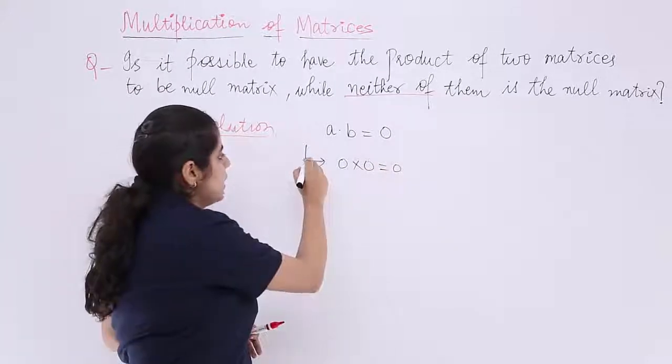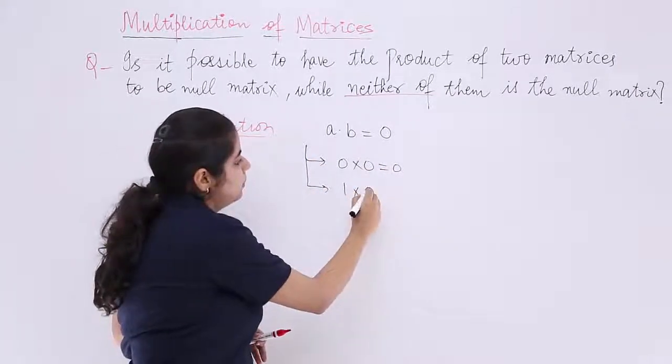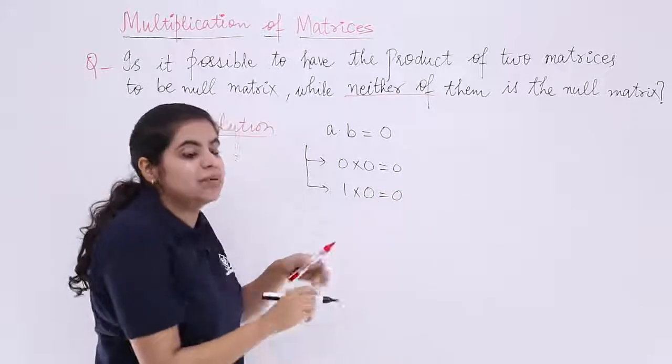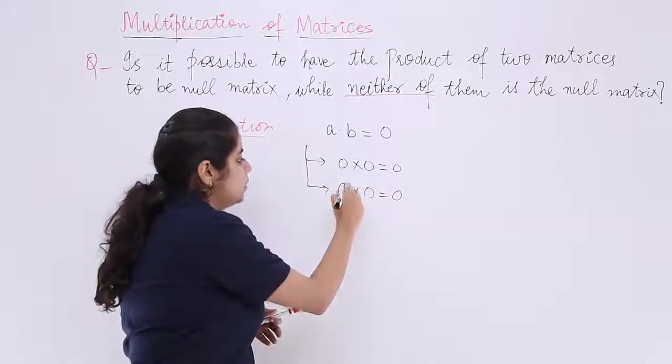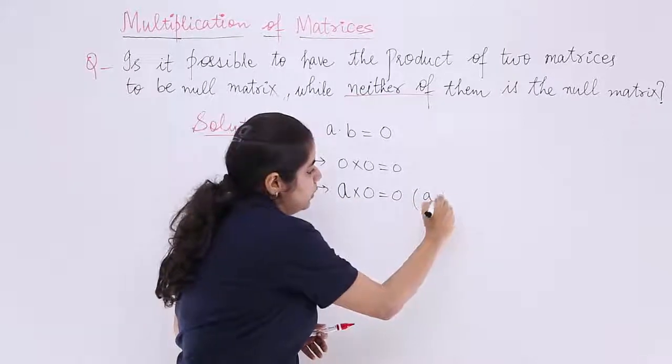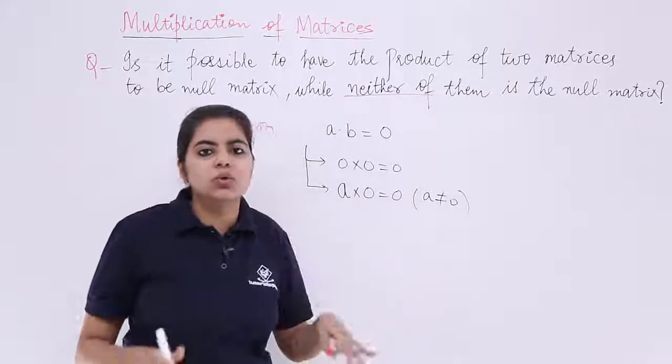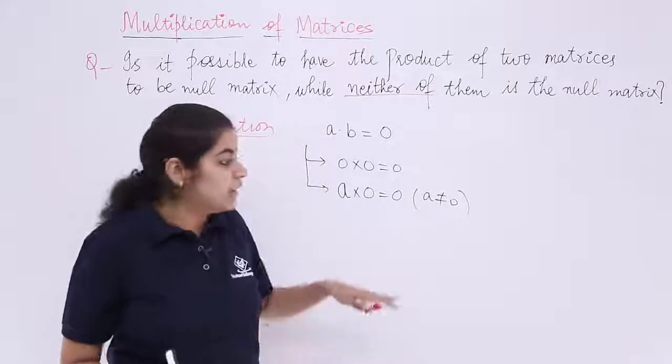The other case is that any number multiply by 0 is 0. Here you take any number where A is not equal to 0. Say 1×0 is 0, 2×0 is 0, 3×0 is 0 and so on.